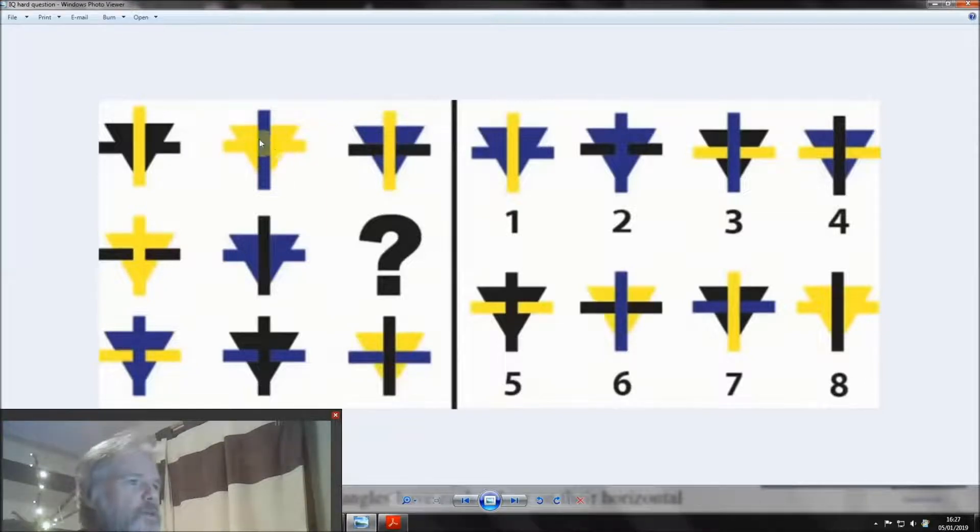So if we look at the yellow ones, we've got on the horizontal: we've got a yellow, we've got a black, and we've got a blue. On the blue we've got a black, a blue, and a yellow. So what you've got on each of the triangles of that color, you've got the three different horizontal bars.